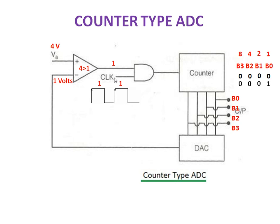If I apply the second pulse, again the clock will be 1, and the AND gate output will become 1. The counter starts counting and increments to 2, represented as 0 0 1 0. The second bit becomes 1 because the number of pulses is equal to 2. This value is given as input to the DAC, which converts it into an equivalent analog voltage of 2 volt.